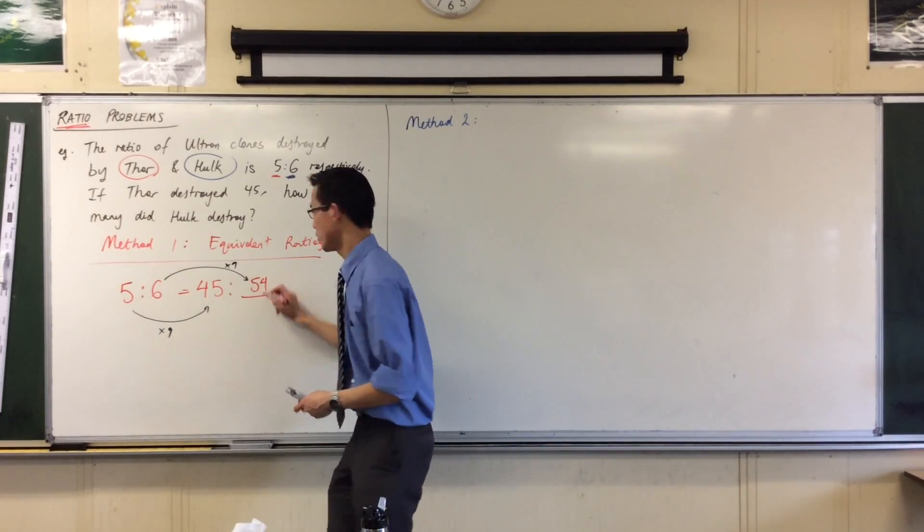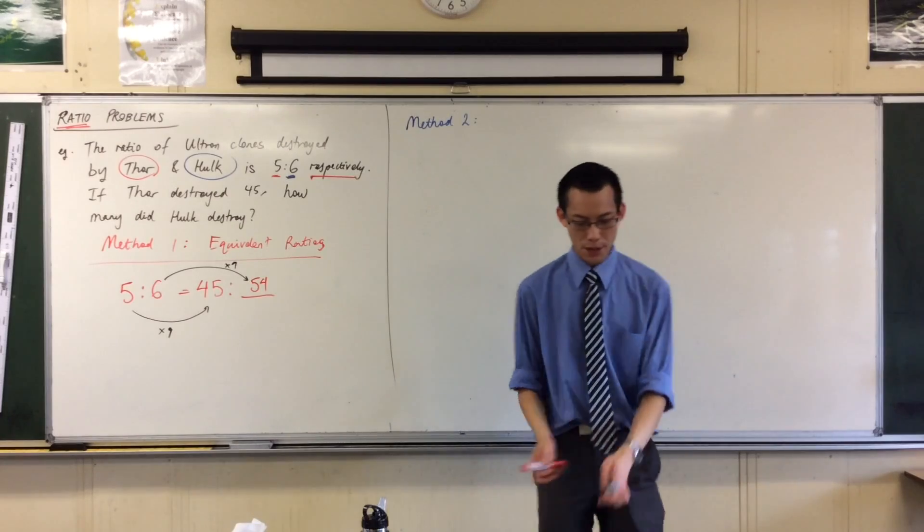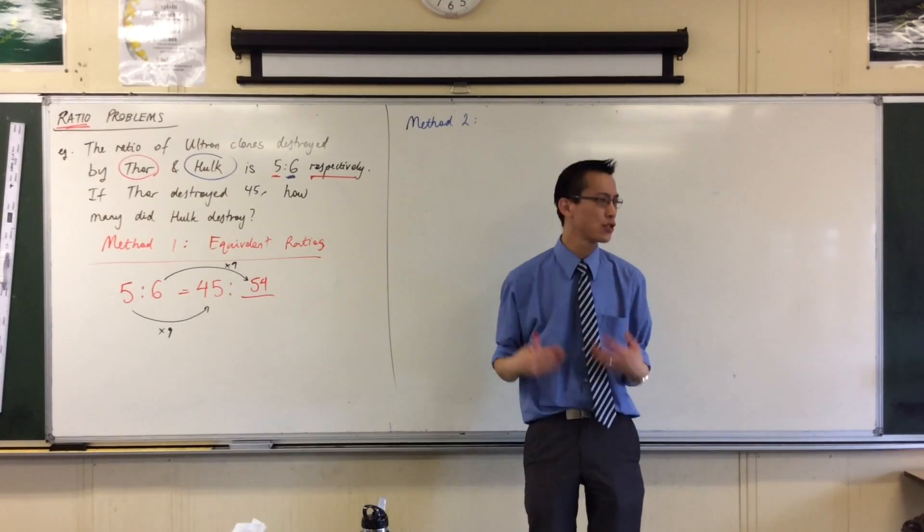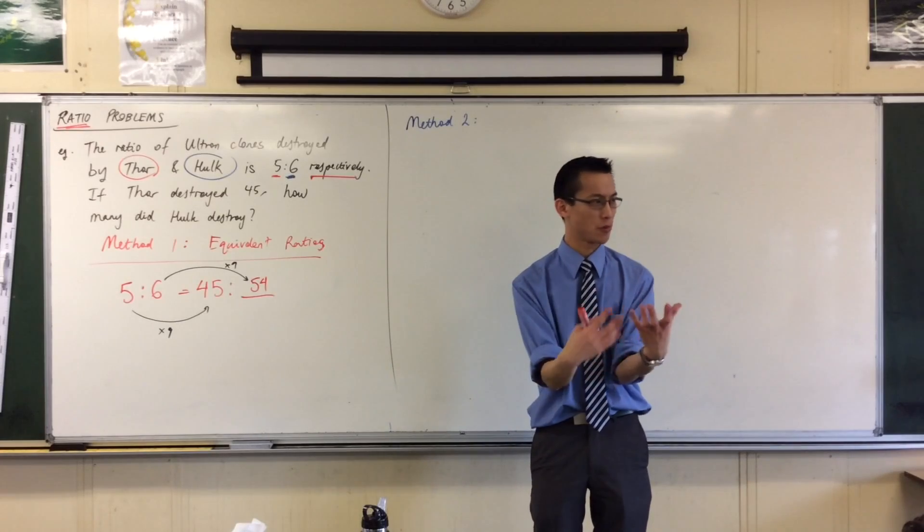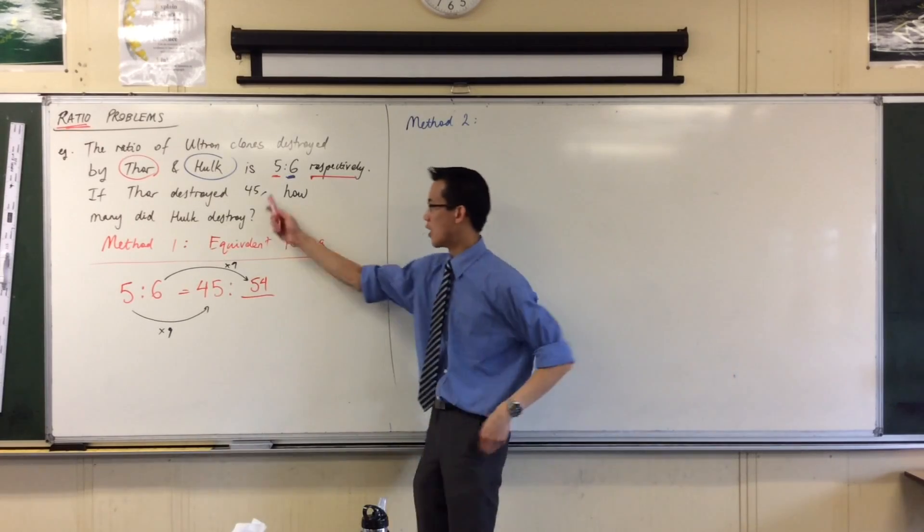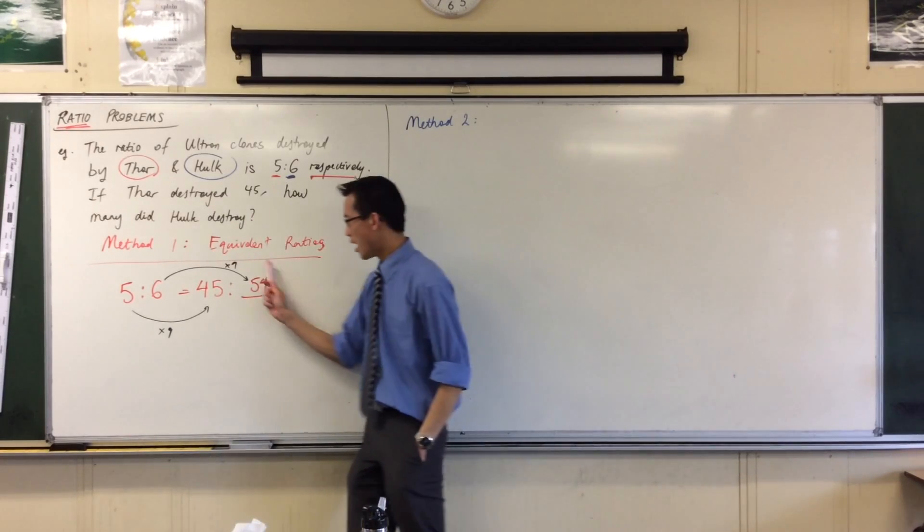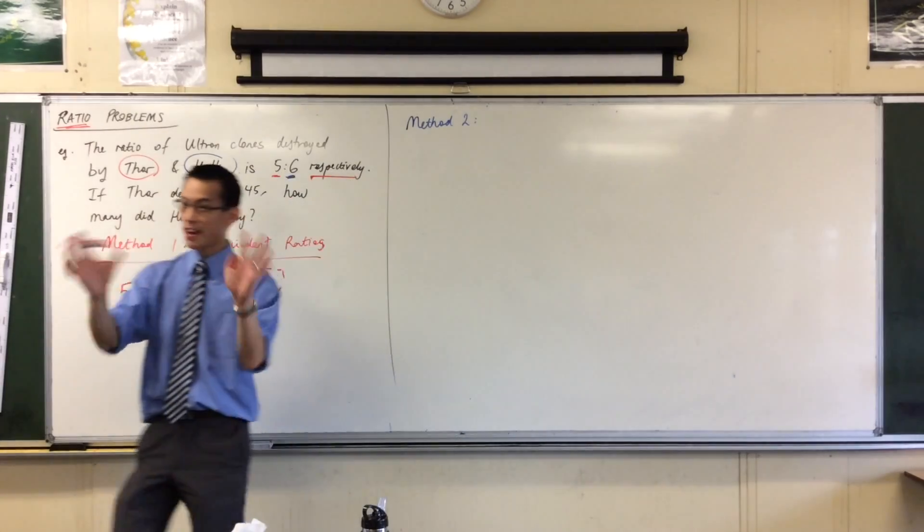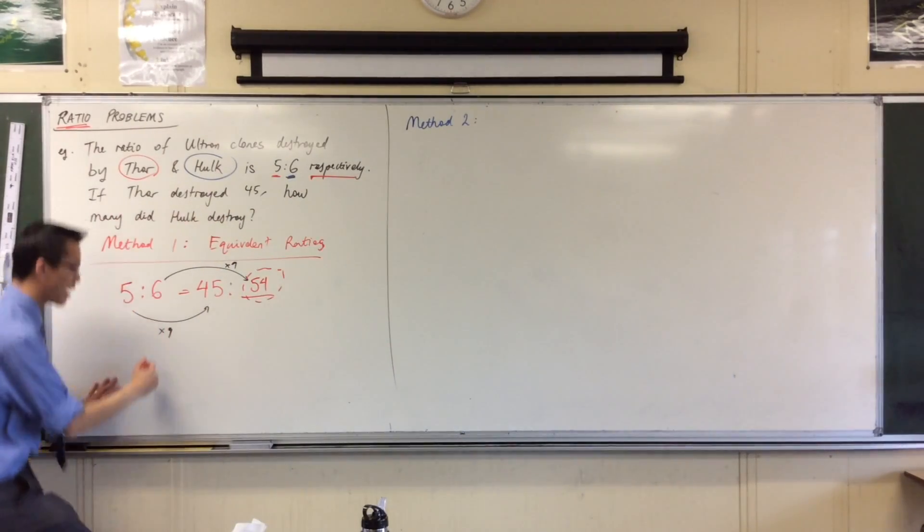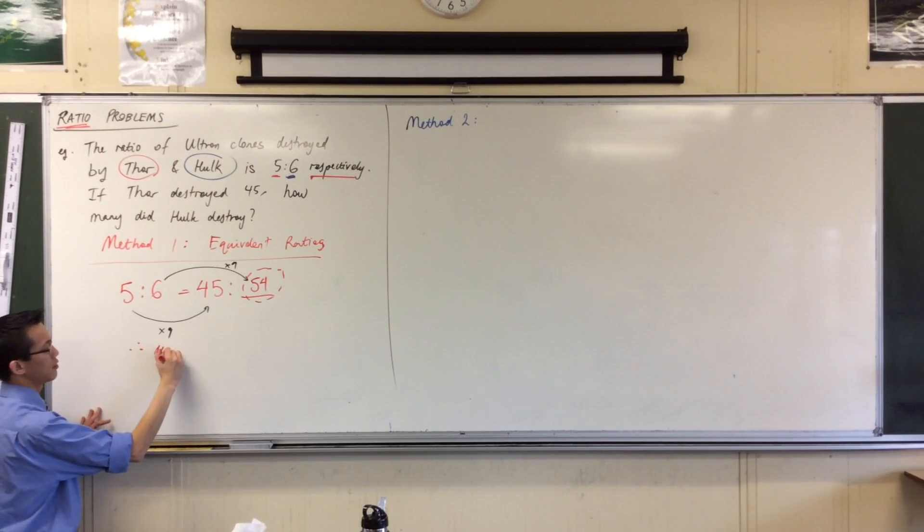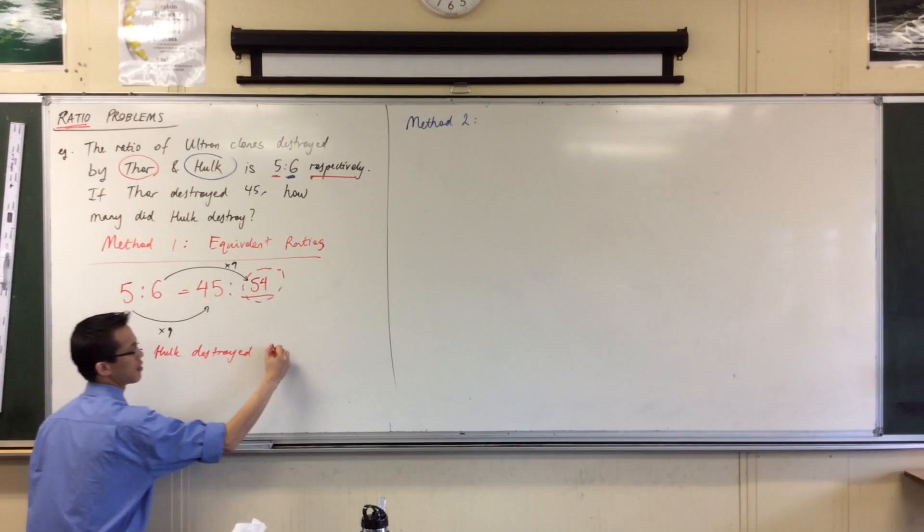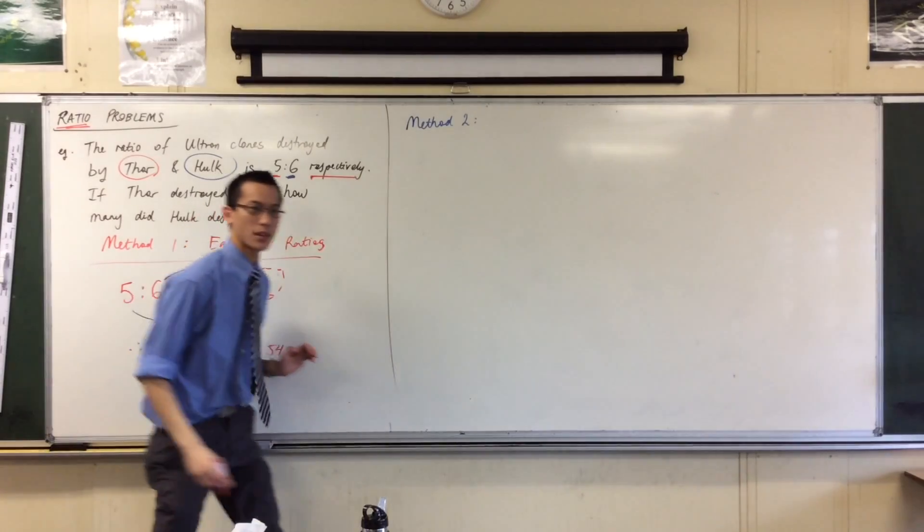So, fifty-four. Okay, now there's my working, but keep in mind, I come back to the question, and I want to know, what was the actual thing they wanted? What question do I have to answer? And that is, how many did Hulk destroy? The only number I'm really interested in is this one that I wrote down here. So I'm just going to tie it up in a nice neat bow, and conclude down the end here. Therefore, Hulk destroyed 54. Done.